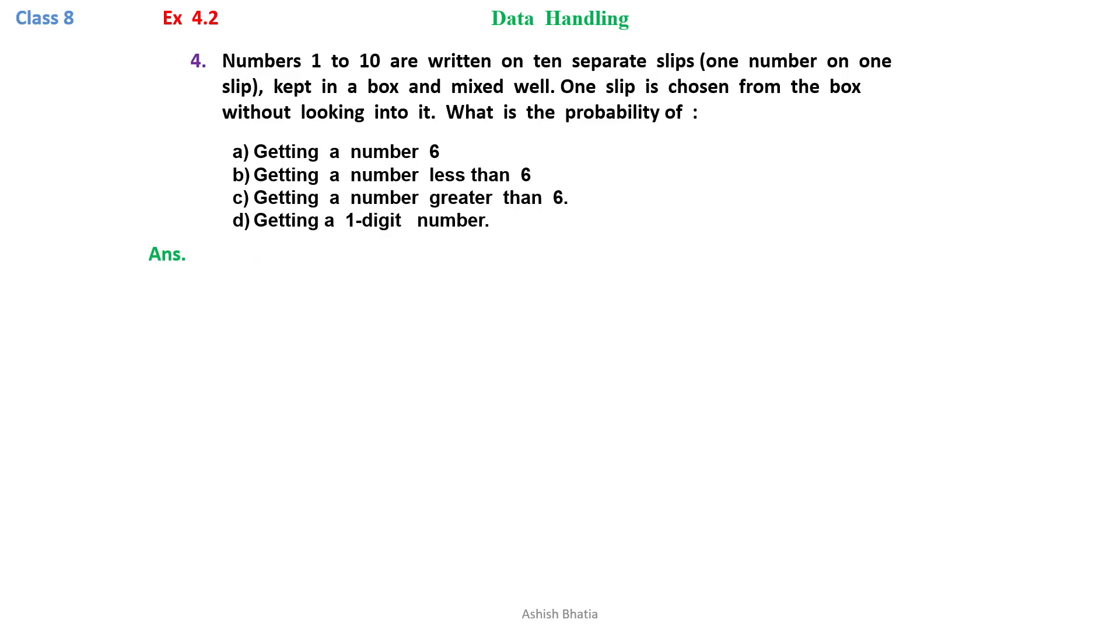Exercise 4.2, question number 4. Numbers 1 to 10 are written on 10 separate slips, one number on one slip, kept in a box and mixed well. One slip is chosen from the box without looking into it.